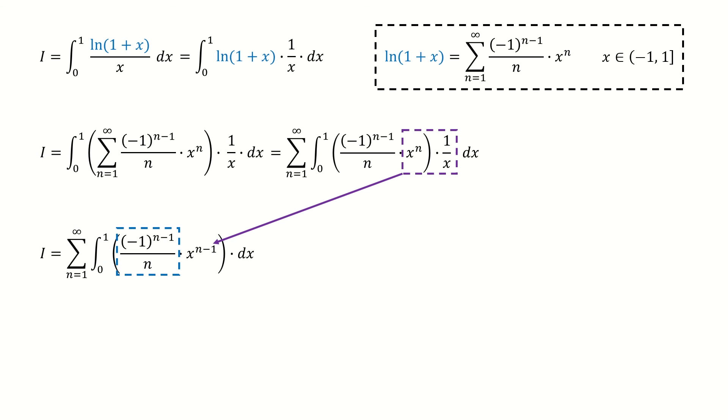For this term, we take it out of the integral. This green-colored integral is simple, so we just integrate it and get this result.